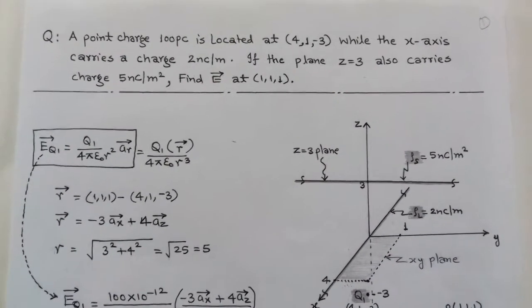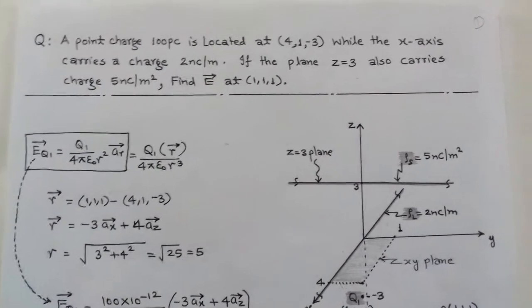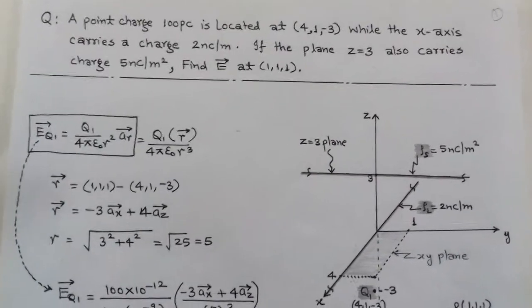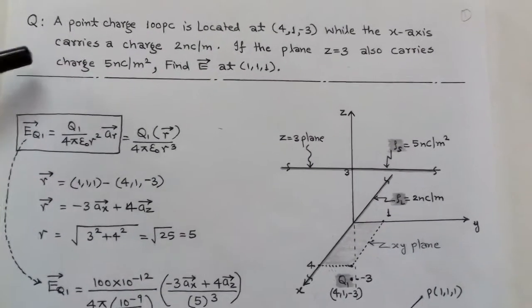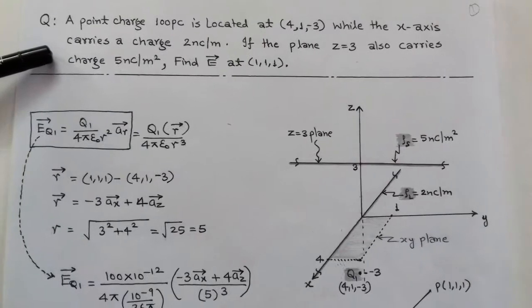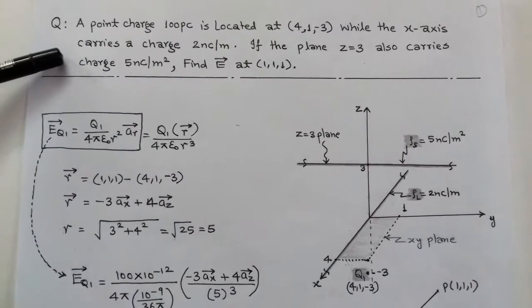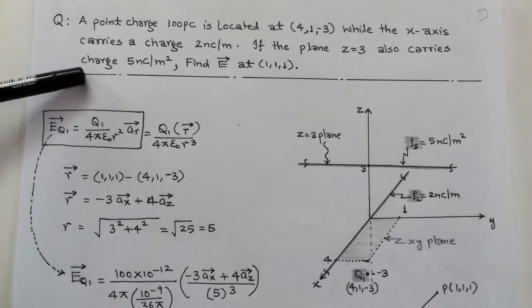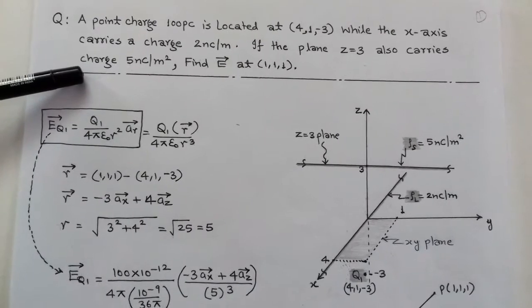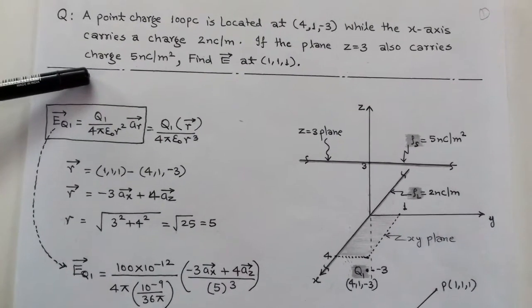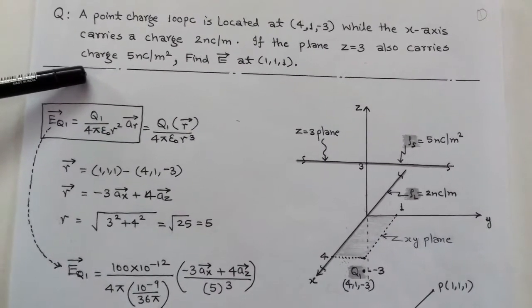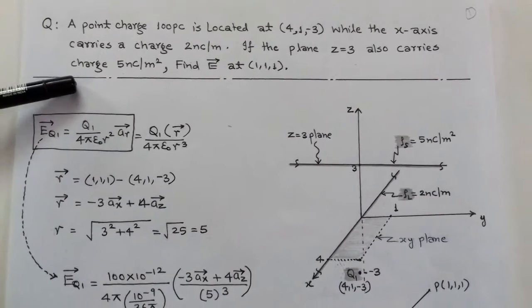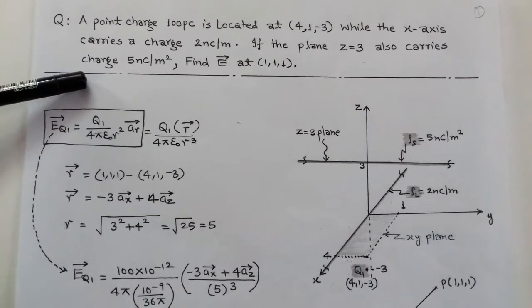The question is: a point charge of 100 picocoulombs is located at (4, 1, -3), while the x-axis carries a charge of 2 nanocoulombs per meter. If the plane z = 3 also carries a charge of 5 nanocoulombs per meter squared, find the electric field intensity E at (1, 1, 1).